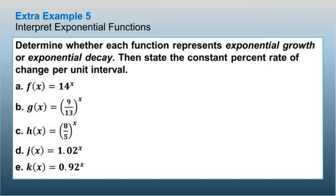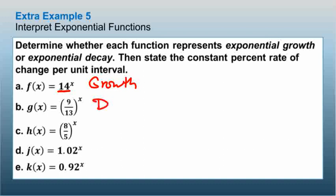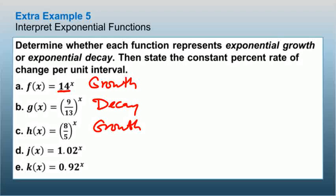Continuing the growth or decay identification: b = 14 is growth; b = 9/13 is decay; b = 8/5 is growth; b = 1.02 is growth; and b = 0.92 is decay.